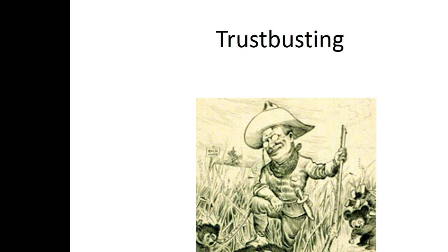One thing Roosevelt is very well known for is trust-busting. He basically wanted to stop the monopolies and stop the trusts, much like the Sherman Antitrust Act aimed to do. The Sherman Antitrust Act had made trusts illegal, but it was very hard to enforce. Roosevelt helped enforce it by filing several antitrust suits and breaking up many different trusts during his presidency. There still needed to be some revisions to make it fully effective, but he took good efforts to eliminate corruption within business.